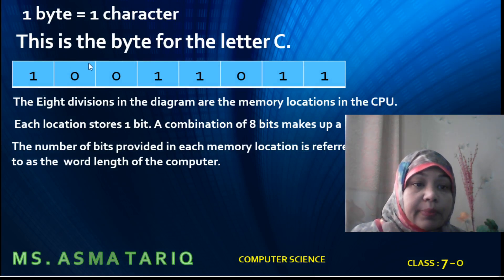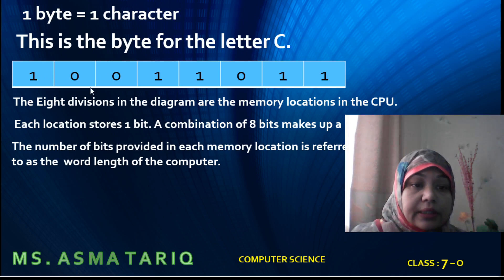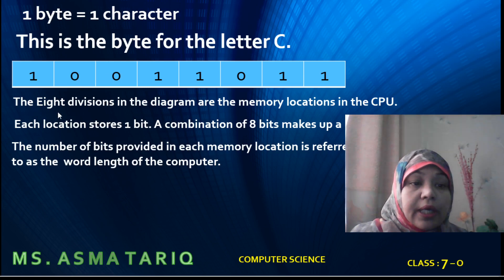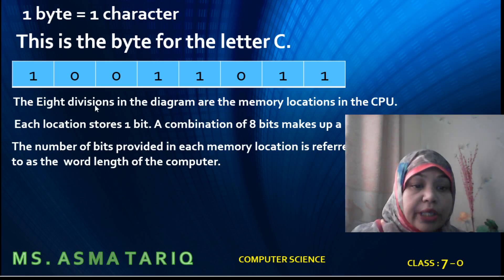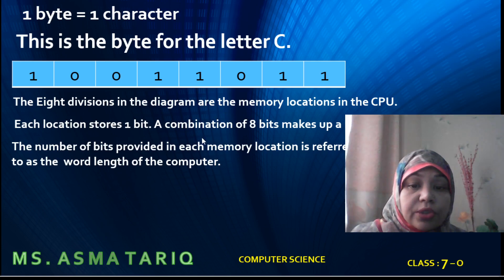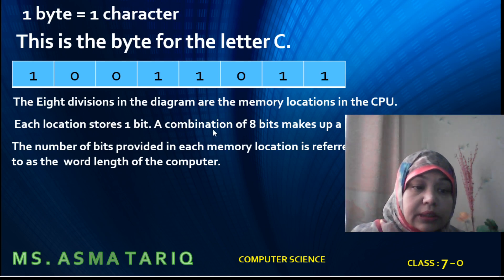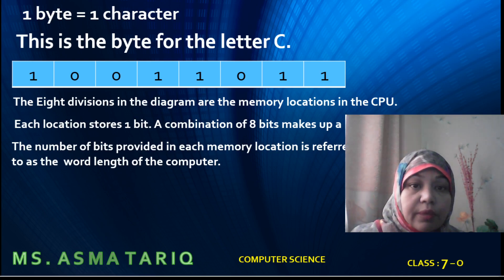In this example, this is the byte for the letter C. There are eight bits that represent one character in one byte. Each of the eight divisions in the diagram are the memory locations in the CPU. Each location stores one byte. A combination of eight bits makes up a byte. The number of bits provided in each memory location is referred to as the word length of the computer.